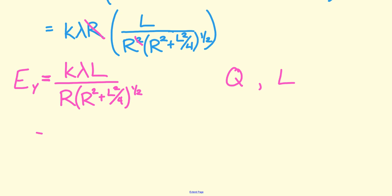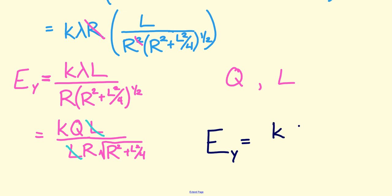I'll also, instead of writing that as that quantity to the 1 half, I'll write it as the square root. You can see that there is an L in my numerator and my denominator, so I can cancel that out. And so we see that my final expression for the electric field at point P is KQ over R times the square root of R squared plus L squared over 4.